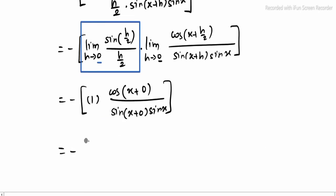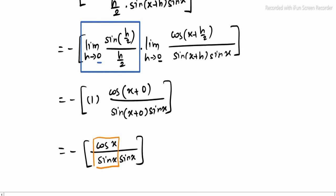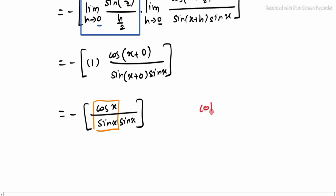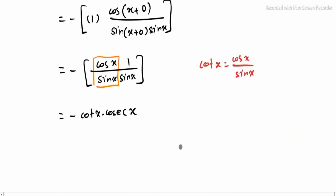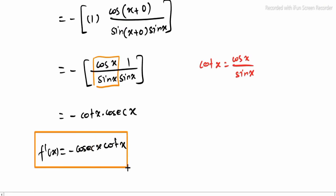Now minus of cos x divided by sin x into sin x. In this place, cos x divided by sin x is cot x — we know cot x is equal to cos x divided by sin x. So replace pannla: minus cot x into 1 by sin x, which is cosecant x. So the derivative of cosecant x is minus cosecant x into cot x. That is f dash of x. Thank you.